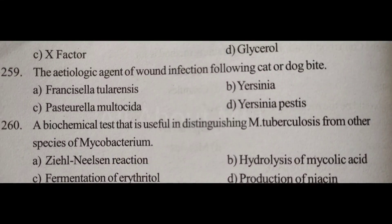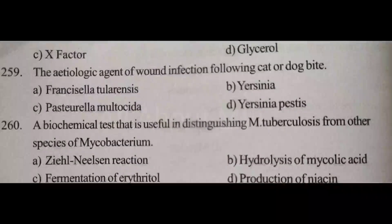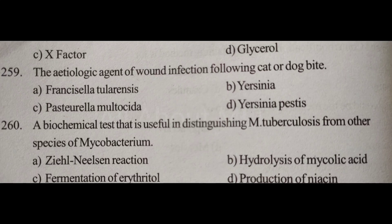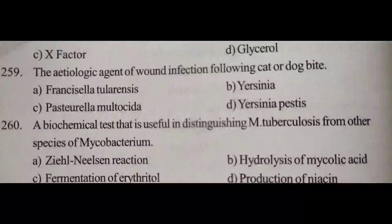Biochemical test that is useful in distinguishing M. tuberculosis from other species of Mycobacterium. Option A: Seal-Nielsen reaction. Option B: Hydrolysis of mycolic acid. Option C: Fermentation of erythritol. Option D: Production of niacin. Answer is Option D: Production of niacin.